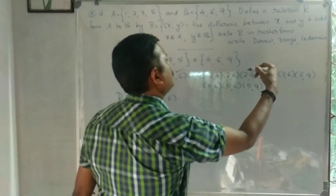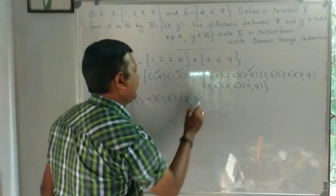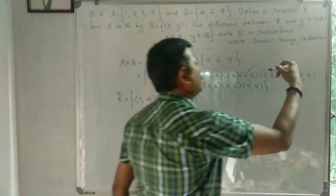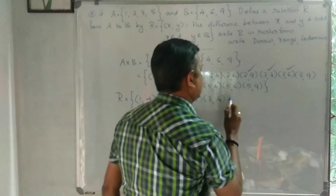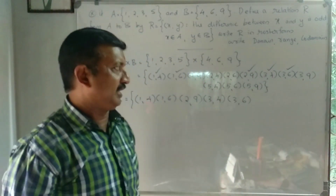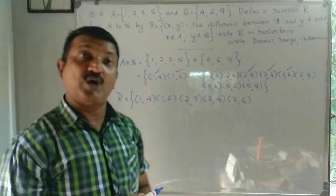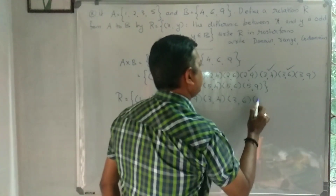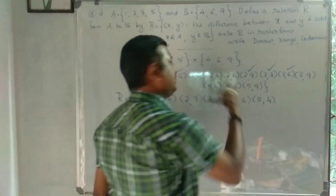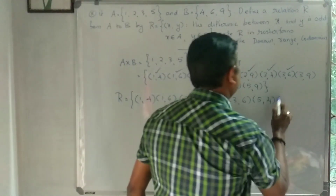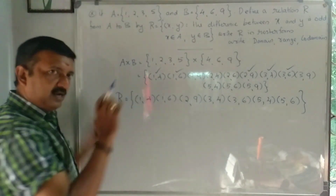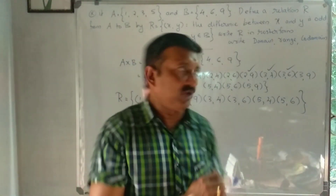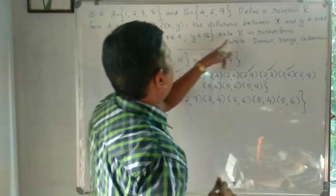Continuing: (2,9): 9 - 2 = 7, odd. (3,4): 4 - 3 = 1, odd. (3,6): 6 - 3 = 3, odd. (3,9): 9 - 3 = 6, even. (5,4): 5 - 4 = 1, odd. (5,6): 6 - 5 = 1, odd. (5,9): 9 - 5 = 4, even.